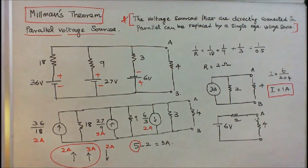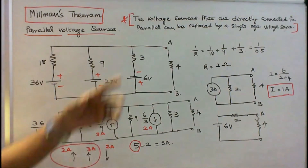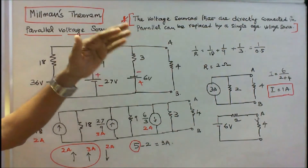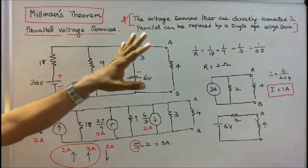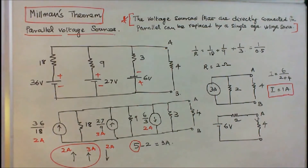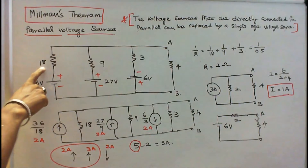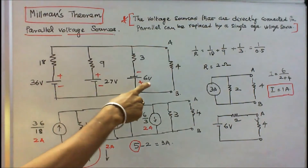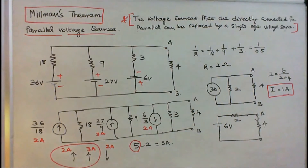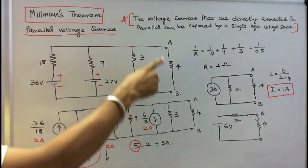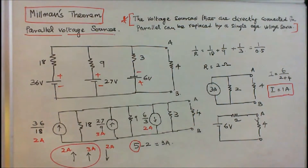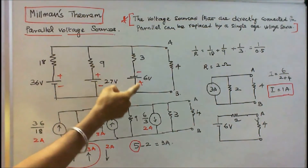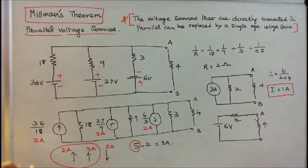Parallel Voltage Sources: The voltage sources that are connected in parallel can be replaced by a single equivalent voltage source. Here we have 36 Volts with 18 Ohms, 27 Volts with 9 Ohms, and 6 Volts with 3 Ohms. We need to find the current flow through the 4 Ohm resistor. I will convert this into an equivalent current source.